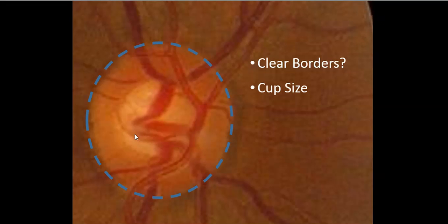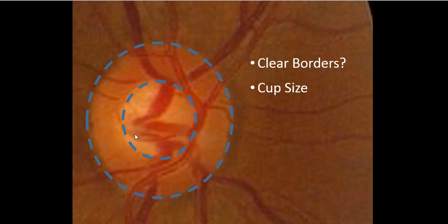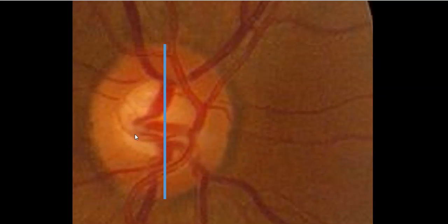The next question to ask ourselves is the cup size in the middle. How large is the size of the cup compared to the actual size of the optic nerve itself? The way that we typically make this measurement is by considering the vertical dimensions. So if this is our measurement of the vertical length of the entire optic nerve, we can also draw out the length of the cup itself and compare the two. In this case, the cup-disc ratio would be about 0.5.